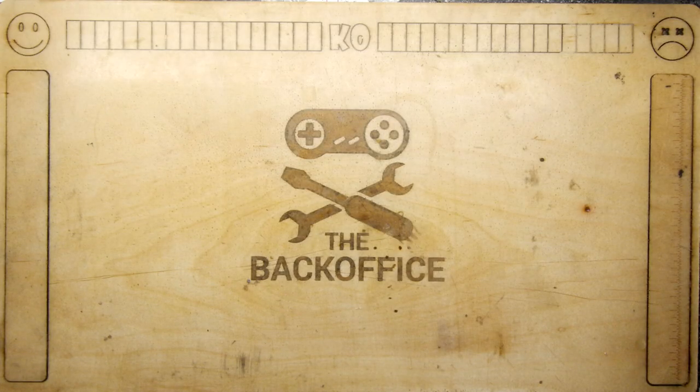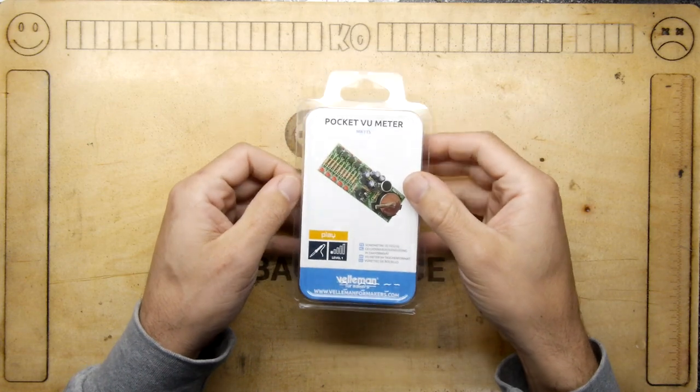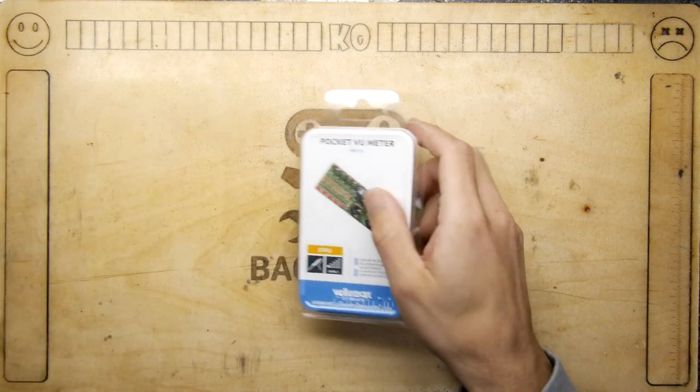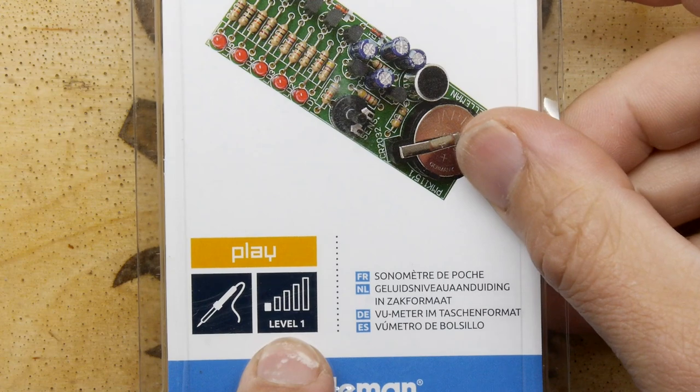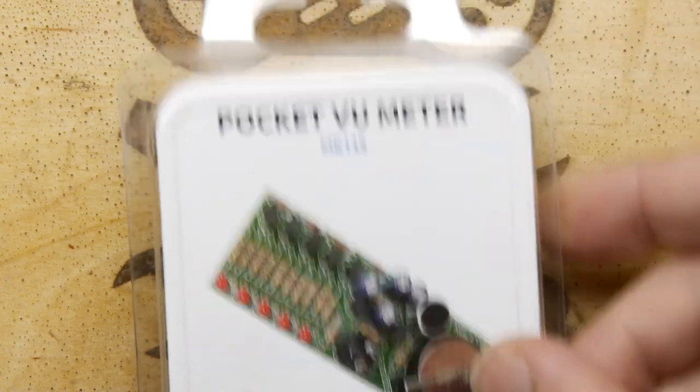Hi guys, I'm Andrew Armstrong and welcome to the BackOffice Teardown Lab. Today we have a Pocket VU Meter by Velleman. It's the MK115 kit and it's easy peasy, lemon squeezy. That's the title. Pocket VU Meter.